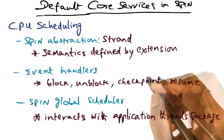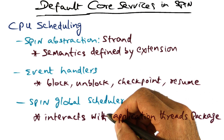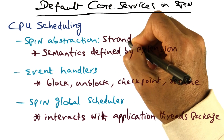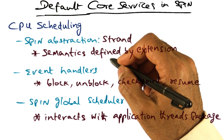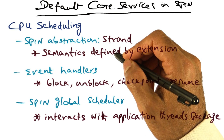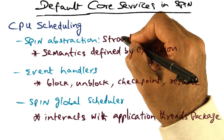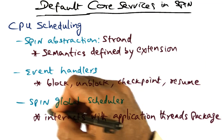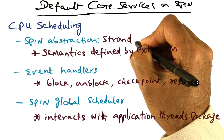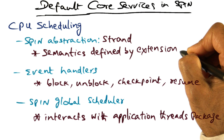To support the concept of threads in the operating system and management of time, Spin provides an abstraction called strand. The actual operating systems that extend Spin will have their threads map to strands. The strand is the unit of scheduling that Spin's global scheduler uses, but the semantics of the strand are entirely decided by the extension.